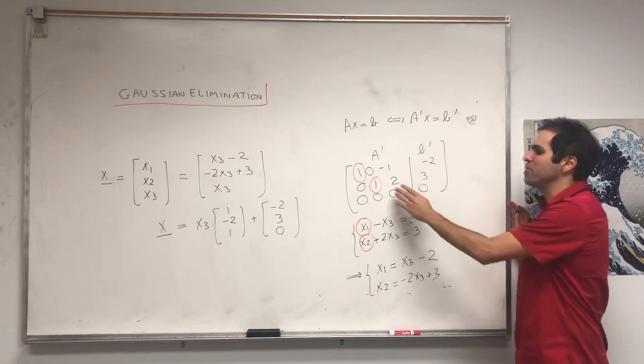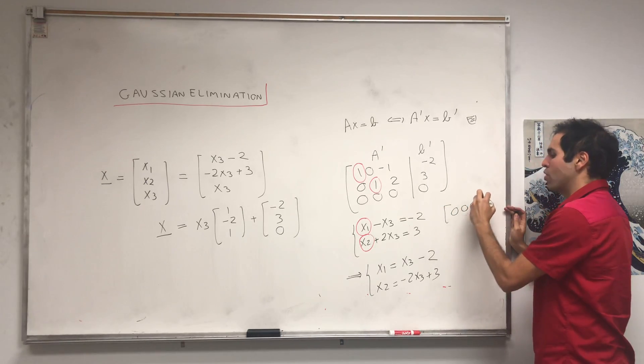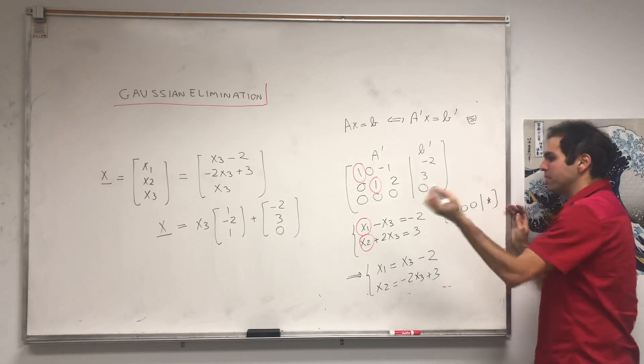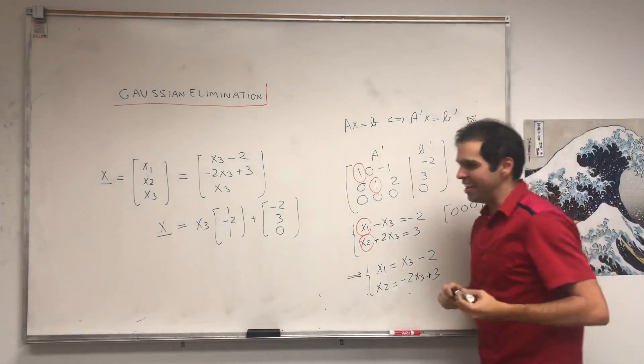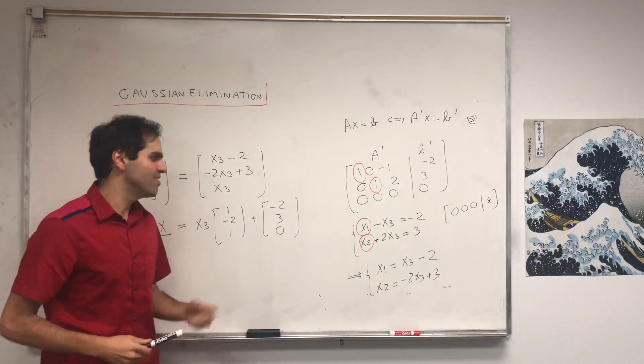And if there's no solution, you can also see that in the matrix, that would happen if there's a row of the form [0, 0, 0, something else]. And that will be the point of another video when we have non-existence of solutions.